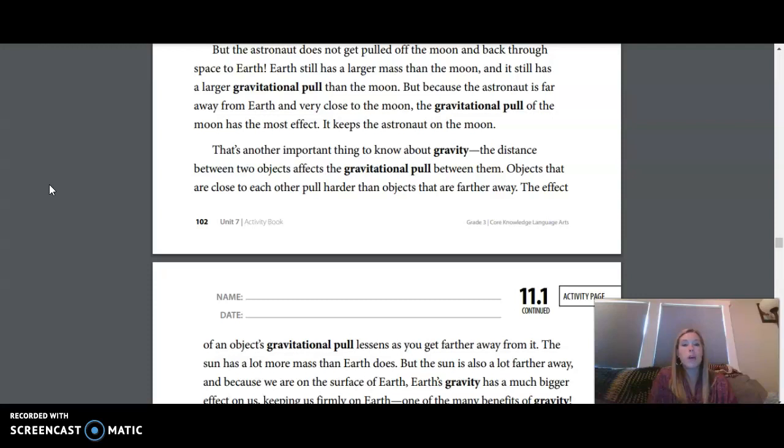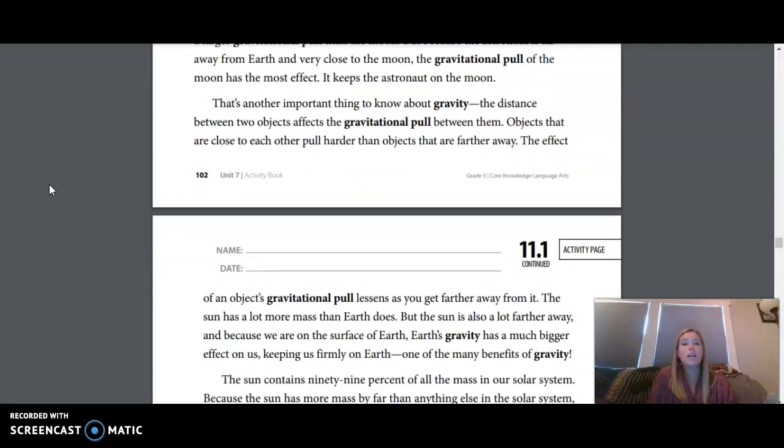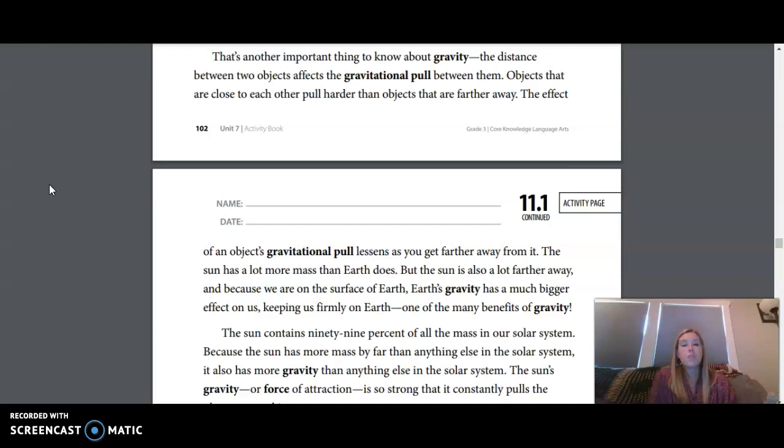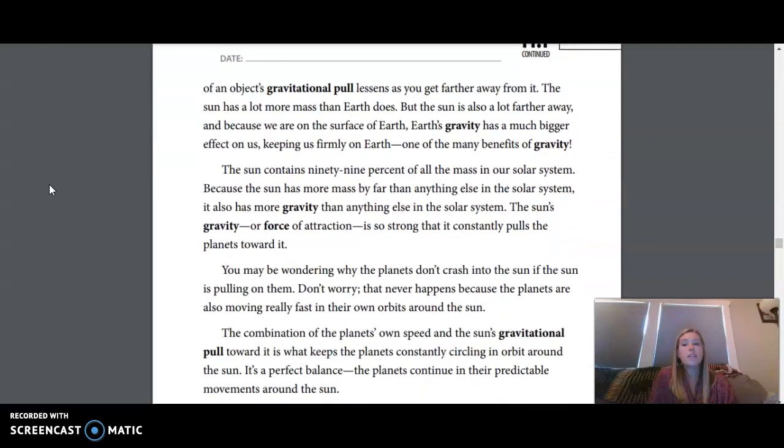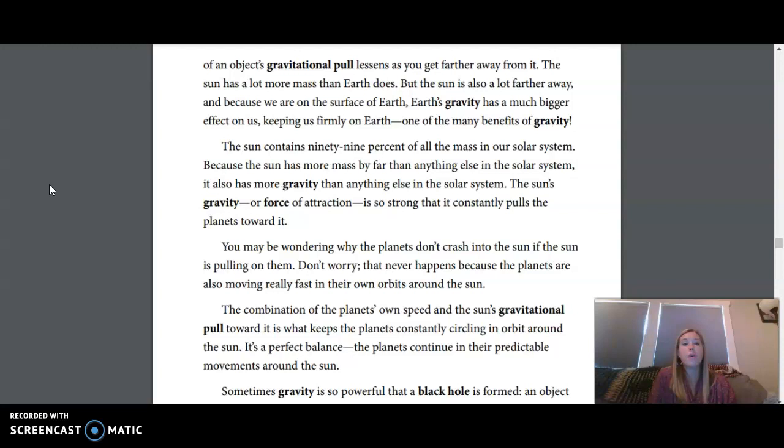But the astronaut does not get pulled off the Moon and back through space to Earth. Earth still has a larger mass than the Moon, and it still has a larger gravitational pull than the Moon. But because the astronaut is far away from Earth and very close to the Moon, the gravitational pull of the Moon has the most effect. It keeps the astronaut on the Moon. That's another important thing to know about gravity. The distance between two objects affects the gravitational pull between them. Objects that are close together, or close to each other, pull harder than objects that are farther away. The effect of an object's gravitational pull lessens as you get farther away from it.